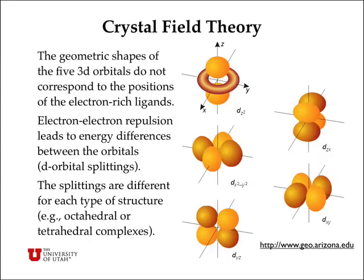To start with simple crystal field theory, we consider the geometric shapes of the five d orbitals as they are oriented along the x, y, and z axes of the system. These geometric shapes of the five 3d orbitals do not correspond to the positions of the electron-rich ligands in transition metal complexes. Electron-electron repulsion between the negatively charged ligands and the orbitals on the central metal atom leads to energy differences between the orbitals, or d orbital splittings. These splittings are different for each type of structure — either octahedral, tetrahedral, or square planar complexes.